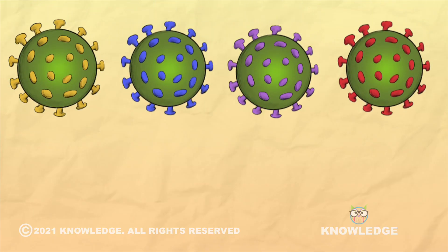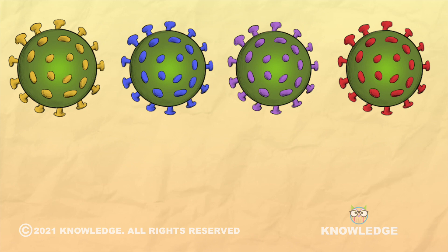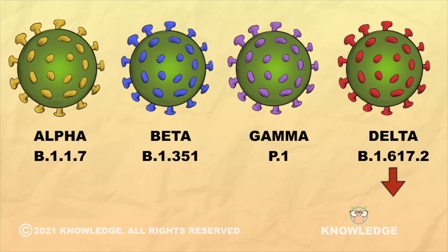Till now, WHO has announced four most concerning variants from the multiple mutations. They are called Alpha, Beta, Gamma and Delta. Among them, the Delta variant has further mutated to form Delta Plus variant.